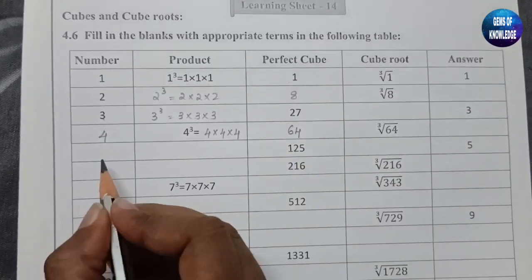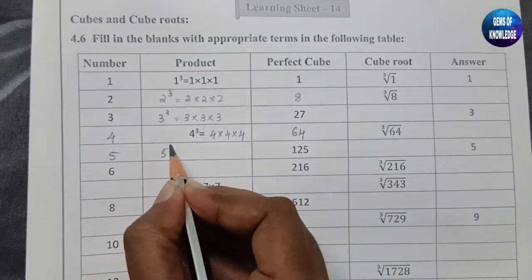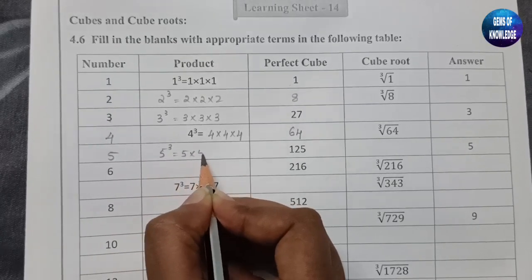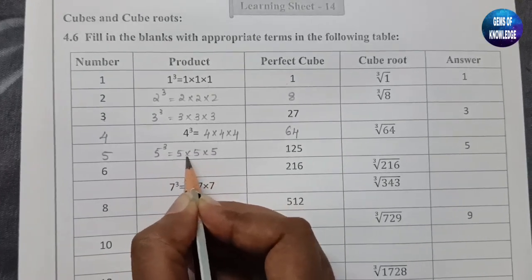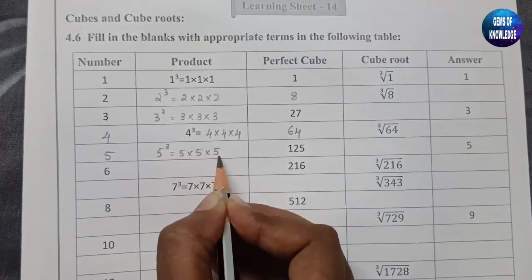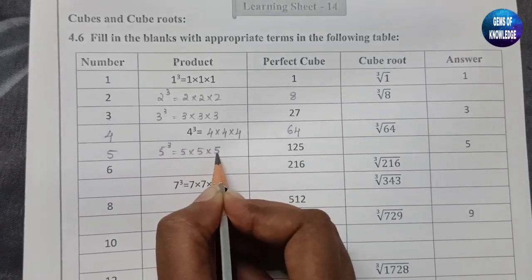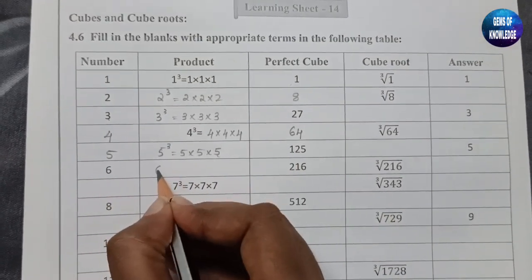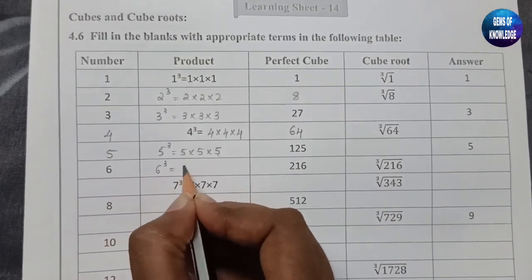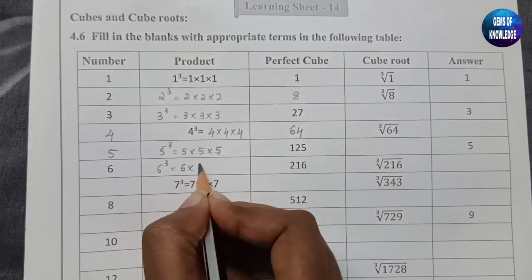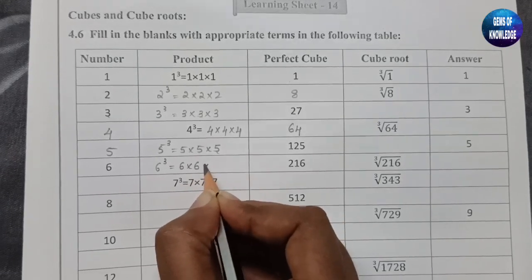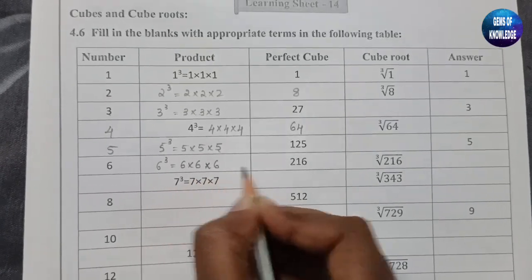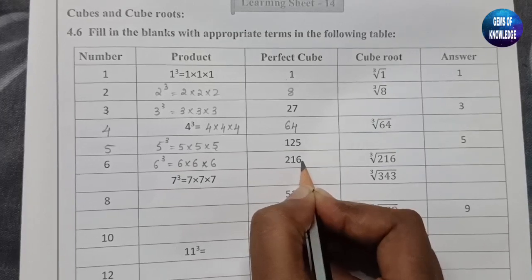Five cube equals five into five into five — five fives are 25, and 25 fives are 125. Six cube equals six into six into six — six sixes are 36, and 36 into six is 216.